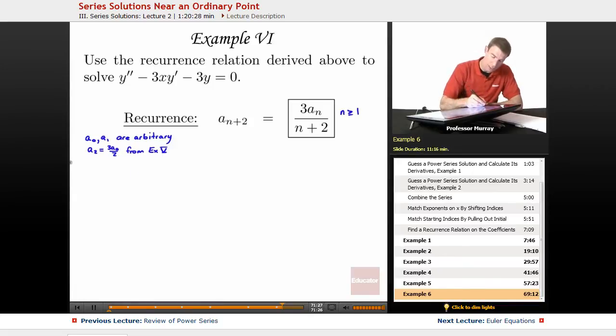And now the recurrence relation is going to kick in, so I'm going to start out by plugging in different values of N, starting at N equals 1, because that was the first value for which my recurrence relation is valid. When I plug in N equals 1, I get A3 is equal to 3A1 over 3, which simplifies down just to A1.